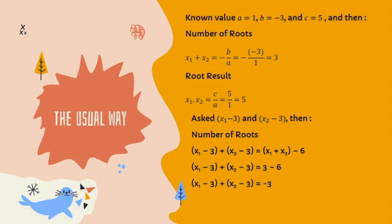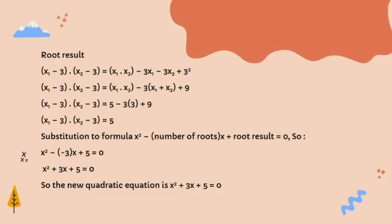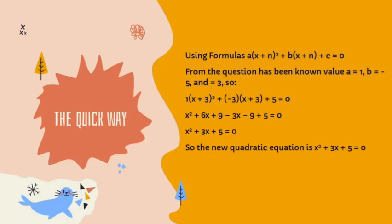The first step is to find the sum of the roots and the product of the roots, then substitute into the new equation formula. So the new quadratic equation is x² + 3x + 5 = 0. For the quick way, use the formula a(x + n)² + b(x + n) + c = 0. From the equation we have a = 1, b = −5, and c = 3. Substituting these values gives the new quadratic equation: x² + 3x + 5 = 0.